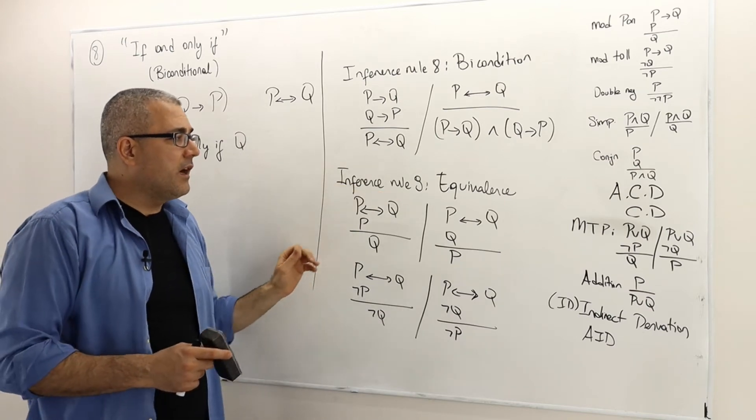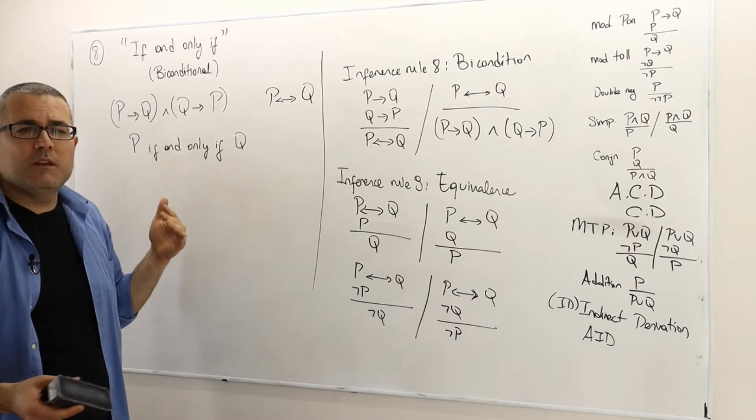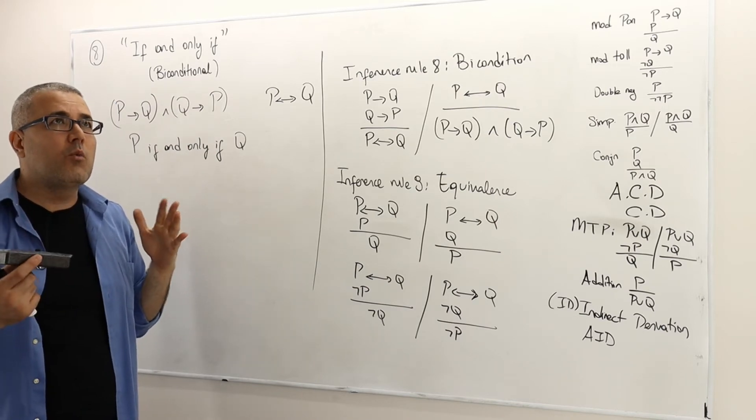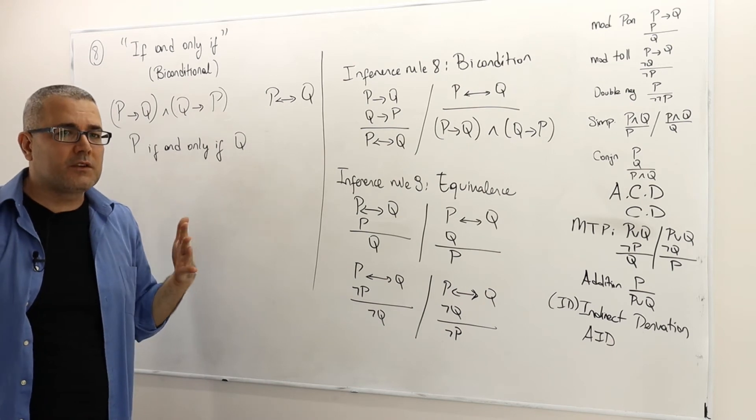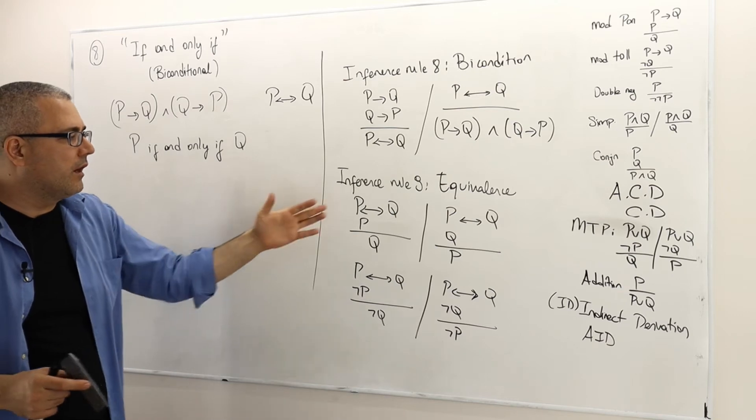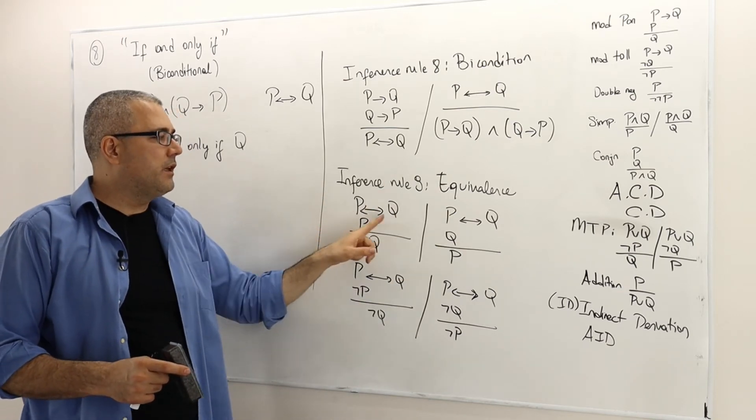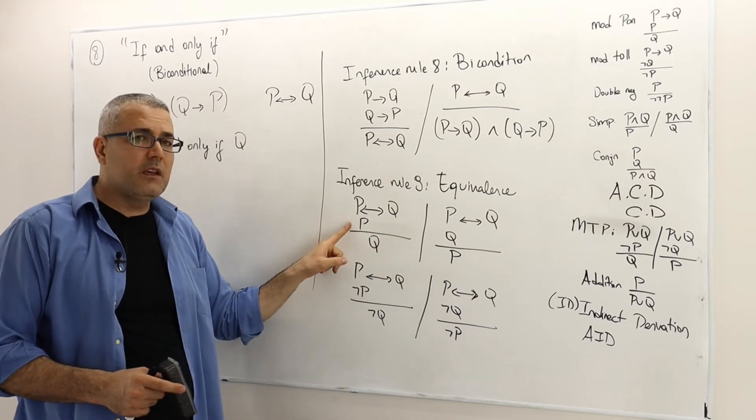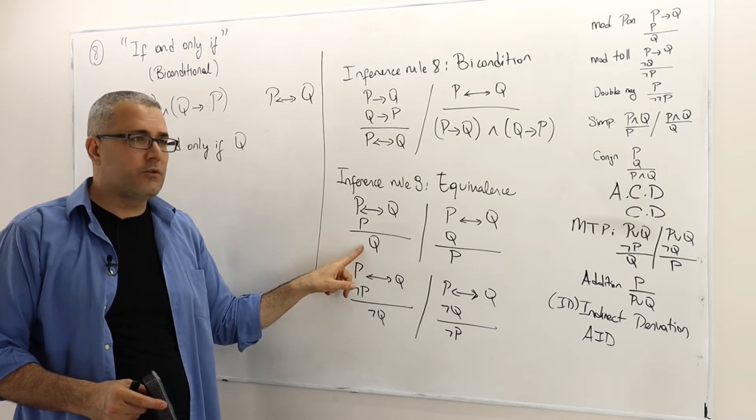And inference rule nine is the equivalence. We said p if and only if q means p is equivalent to q. So when p is true, q must be true and vice versa. And when p is wrong, q must be wrong, vice versa. This is what's summarized here in the equivalence rule. So if p if and only if q is a true statement, and if p is a true sentence, then q must be true.